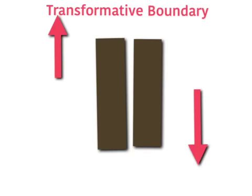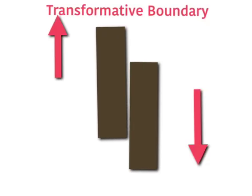Transformative boundaries is when the plates slide past each other without touching. This is caused by convection currents. This brings surface fault formations.